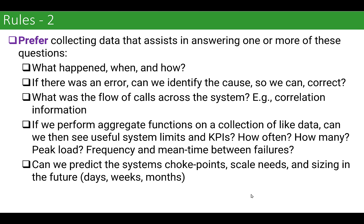We want to prefer collecting data that addresses that temporal problem: what happened in the past, what's happening now, what will happen in the future — with context. Can we reasonably slice and dice this data along different axes to make useful KPIs or understand system limits? Can we use it as a predictive tool to say that our headroom of a particular piece of processing is approaching the ceiling of the system or subsystem, and at some point it's going to start failing because there's not enough capacity?